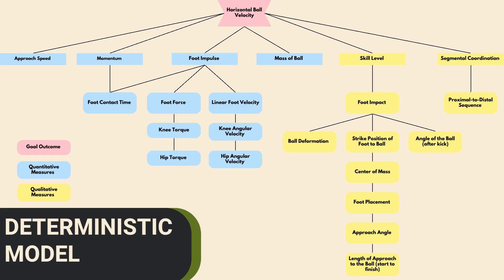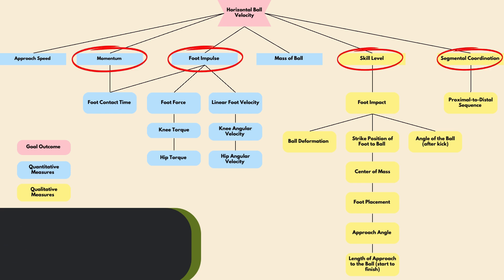The deterministic model shows various factors that contribute to horizontal ball velocity, such as foot impulse, approach speed, and linear foot velocity. Foot contact time, knee angular velocity, and hip torque also play important roles in energy transfer and overall performance.